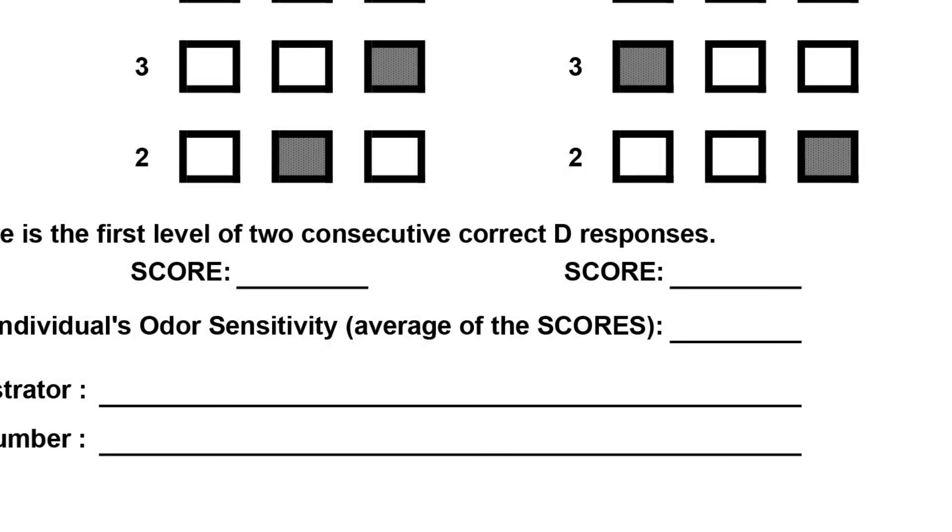The test administrator completed the data sheet by reporting the scores for round one and round two. The average of the two rounds is 7.5, which is the test score for this test individual. Let us review.